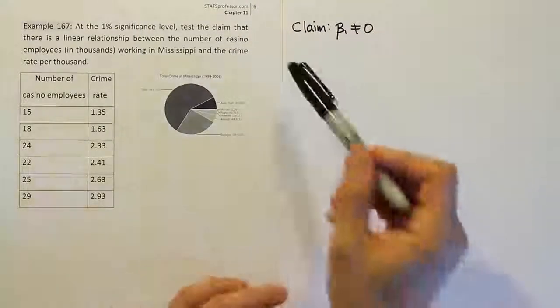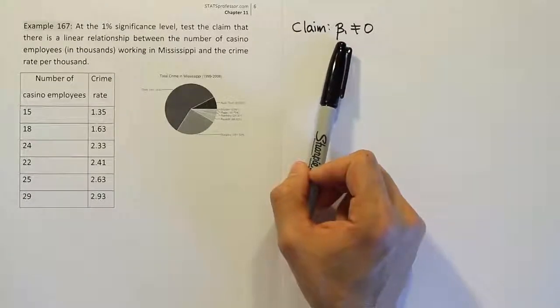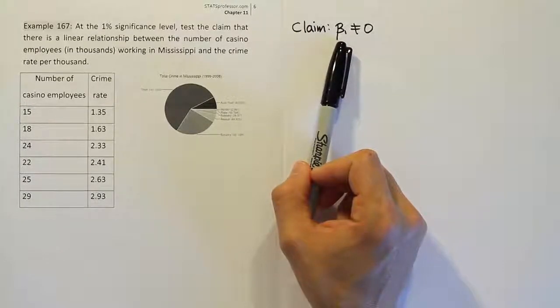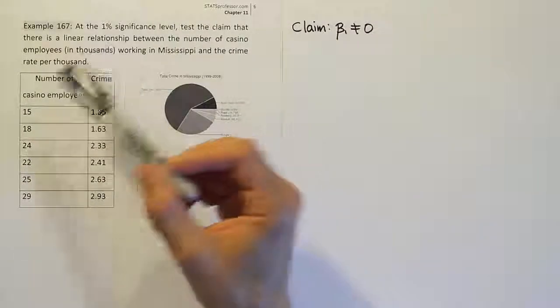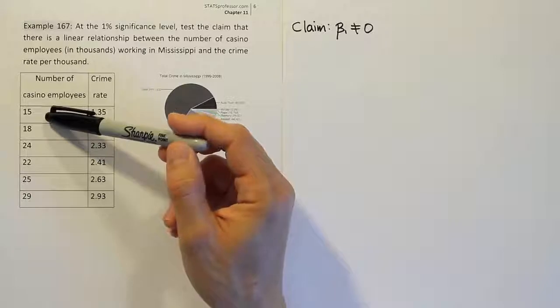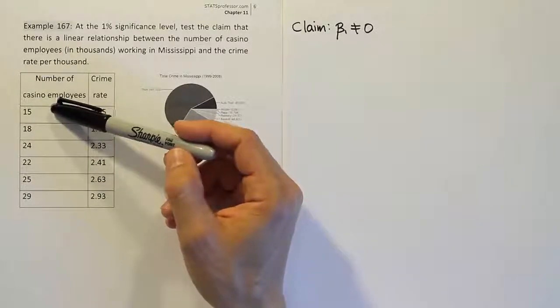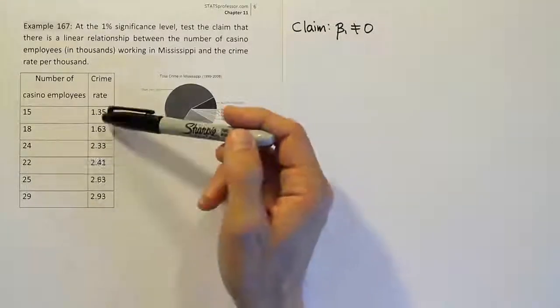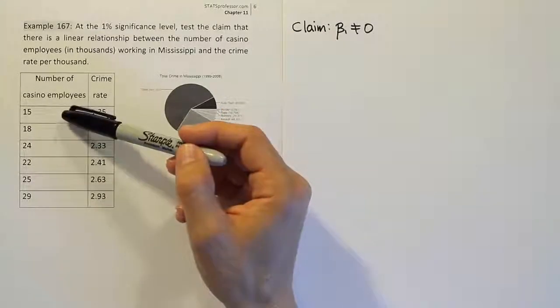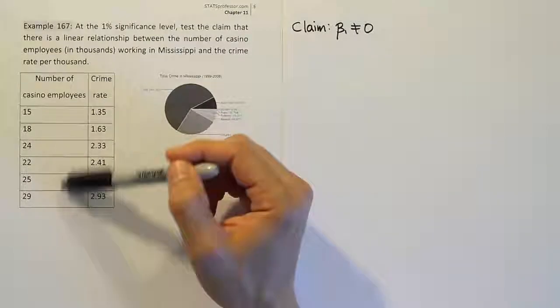Something to keep in mind here about claims: if it's less than zero, the slope, it means a negative relationship. And what that simply means is as the two variables move, they move in opposite directions. In other words, if there was a negative relationship here, we'd be saying that as there's more casino employees, or basically that leads to the idea of more gambling, as there's more gambling, there is lower crime. That would be the idea of a negative relationship. As this one goes up, this one goes down. That's a negative relationship.